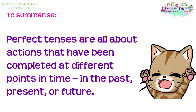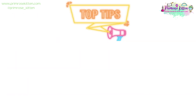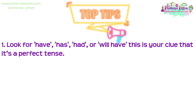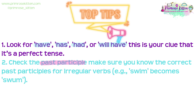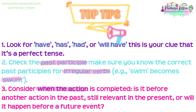To summarise, perfect tenses are all about actions that have been completed at different points in time — in the past, present, or future. Before we wrap up, here are some quick tips. One: look for 'have', 'has', 'had', or 'will have' — this is your clue that it's a perfect tense. Two: check the past participle and make sure you know the correct forms for irregular verbs — for example, 'swim' becomes 'swum'. If you'd like to know more about irregular verbs, check out our spelling series of videos. And finally, consider when the action is completed: is it before another action in the past, still relevant in the present, or will it happen before a future event?